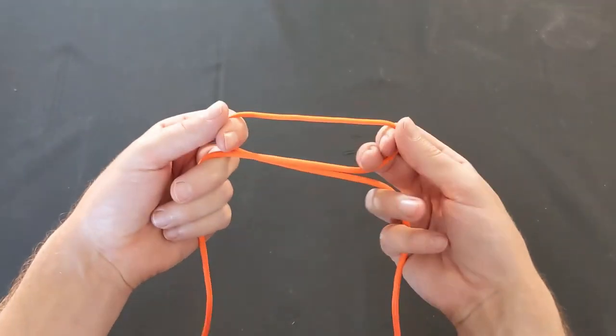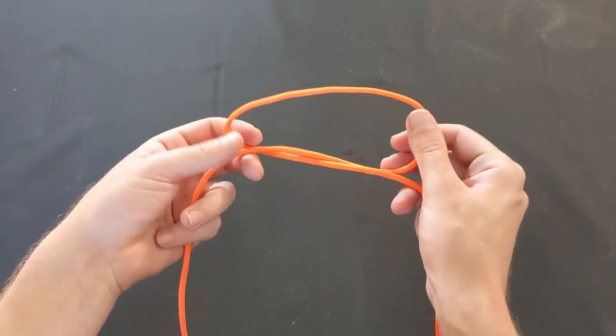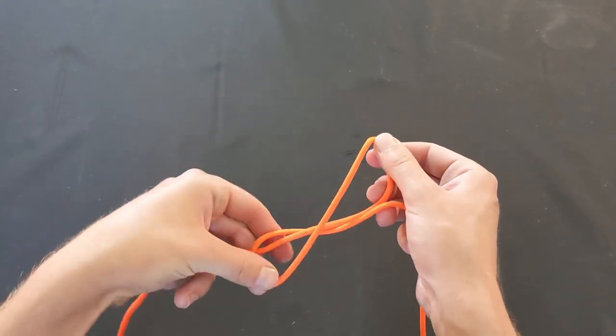Create a loop in your line. Hold the loop on both ends and twist the left side down and towards yourself, creating two loops.